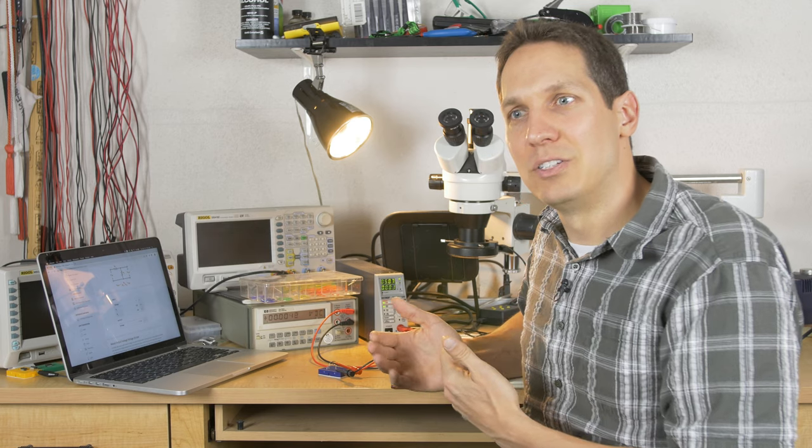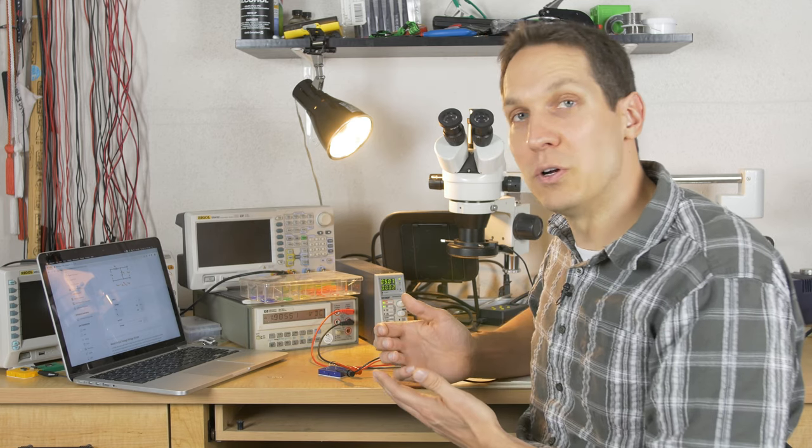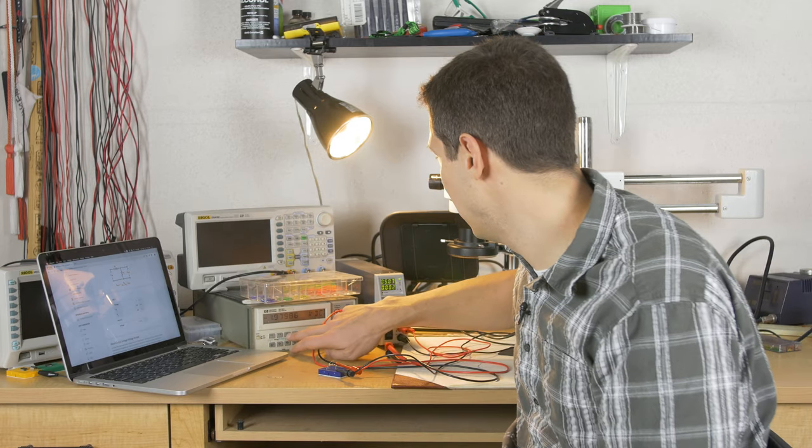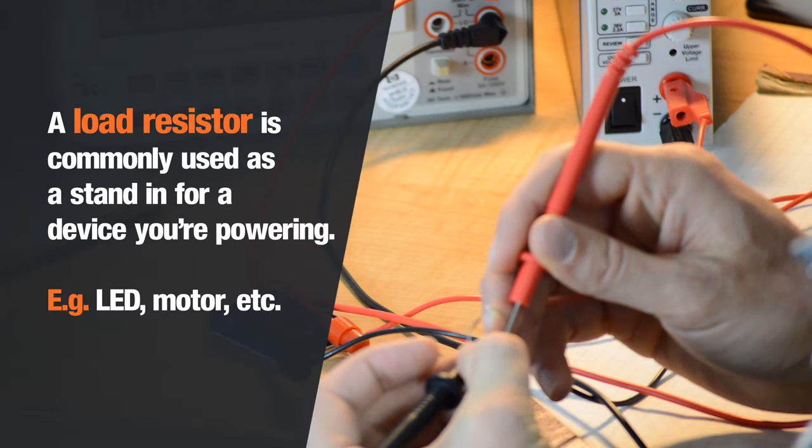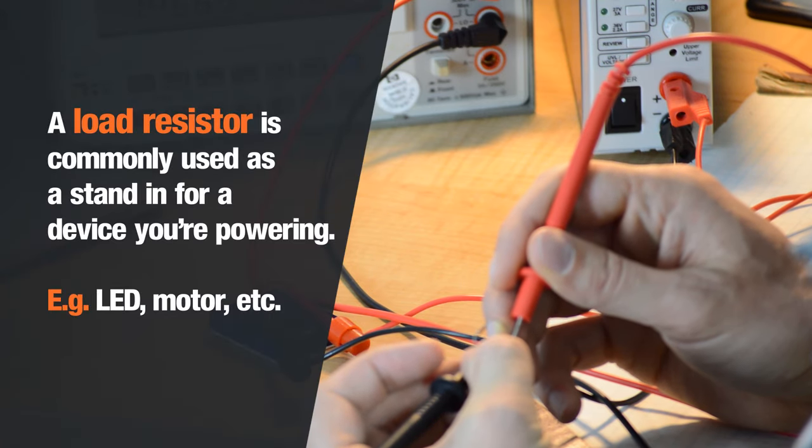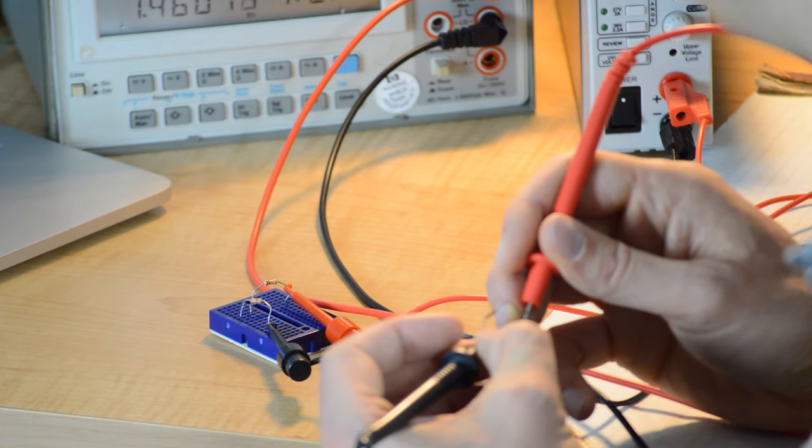This seems great. So why don't we use this method to get the voltage we want all the time? With that, I'm going to put a load in there. Let's measure this load. This resistor is measuring at 1.46 kilohms. It's probably a 1.5 or 1500 ohm resistor.